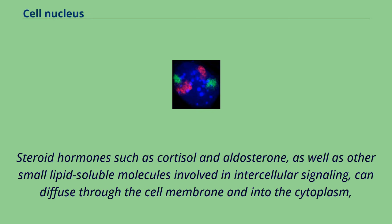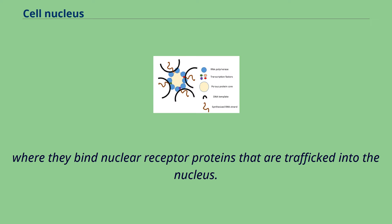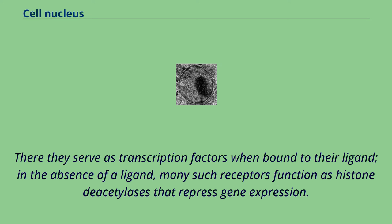Steroid hormones such as cortisol and aldosterone, as well as other small lipid-soluble molecules involved in intercellular signaling, can diffuse through the cell membrane and into the cytoplasm, where they bind nuclear receptor proteins that are trafficked into the nucleus. There they serve as transcription factors when bound to their ligand. In the absence of a ligand, many such receptors function as histone deacetylases that repress gene expression.